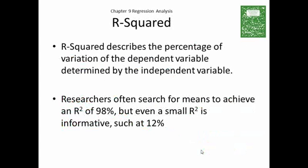If we square r, we end up with r squared. Now, r squared is going to describe the percentage of the variation of the dependent variable that is determined by the independent variable. In other words, an r squared of 98% is considered extremely good. It implies the line that we create out of the regression analysis is a very good description of how the x determines the y.